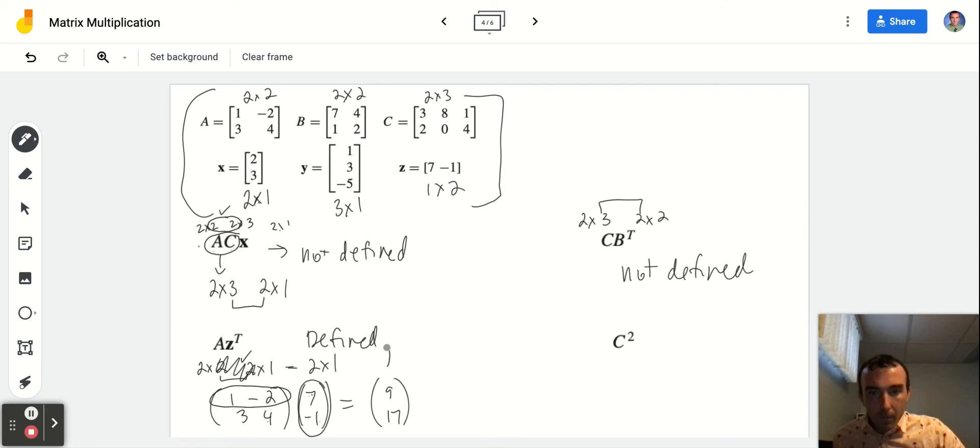Last, C squared. So, C squared. What you don't want to do is square each entry in matrix C. That is not the correct thing to do. Just like when back in algebra when you were told that x plus 9 squared is not equal to x squared plus 81. That's the same mistake you don't want to make here. You don't want to square the entries in C to get 9, 64, 1, 4, 0, 16. Instead, we want to see if multiplying C by itself will give us the answer. Now, if I multiply C by itself, it's a 2 by 3 by a 2 by 3. These numbers don't match each other. You cannot square C. It's not going to work. So, this would be not defined as well.